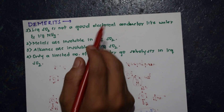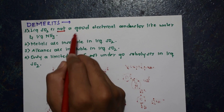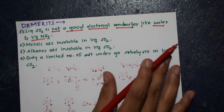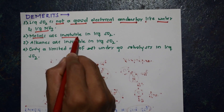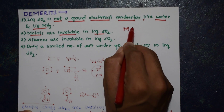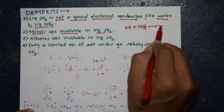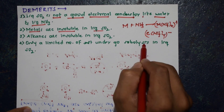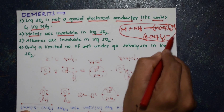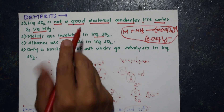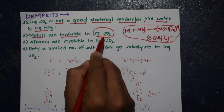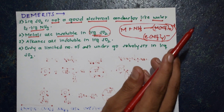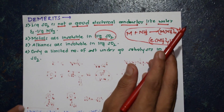Now let us discuss the disadvantages of liquid sulfur dioxide. The first disadvantage is liquid sulfur dioxide is not a good electrical conductor like water and ammonia. The second disadvantage is metals are insoluble in liquid sulfur dioxide. We discussed that metals are soluble in liquid ammonia, giving M(NH3)x+ and electron(NH3)y-. S-block metals react with liquid ammonia, but the same metals do not react with liquid SO2 — they are insoluble. That point should be remembered.